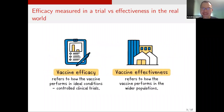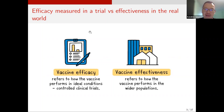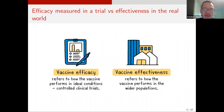We can all agree that understanding how effective a vaccine is has become more and more relevant these days. To understand vaccine efficacy, the gold standard is a randomized clinical trial design, which tries to answer the question of how effective a vaccine is in the target population. Although it often gives an unbiased answer, randomized clinical trials often restrict to a population with fairly restrictive exclusion criteria.